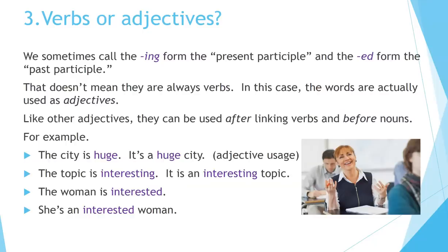We sometimes call the -ing form the present participle and the -ed form the past participle, but that doesn't mean they are always verbs. In this case, the words are actually used as adjectives. Like other adjectives, they can be used after linking verbs and before nouns. For example: the city is huge; it's a huge city. Similarly: the topic is interesting; it's an interesting topic. The woman is interested; she's an interested woman.